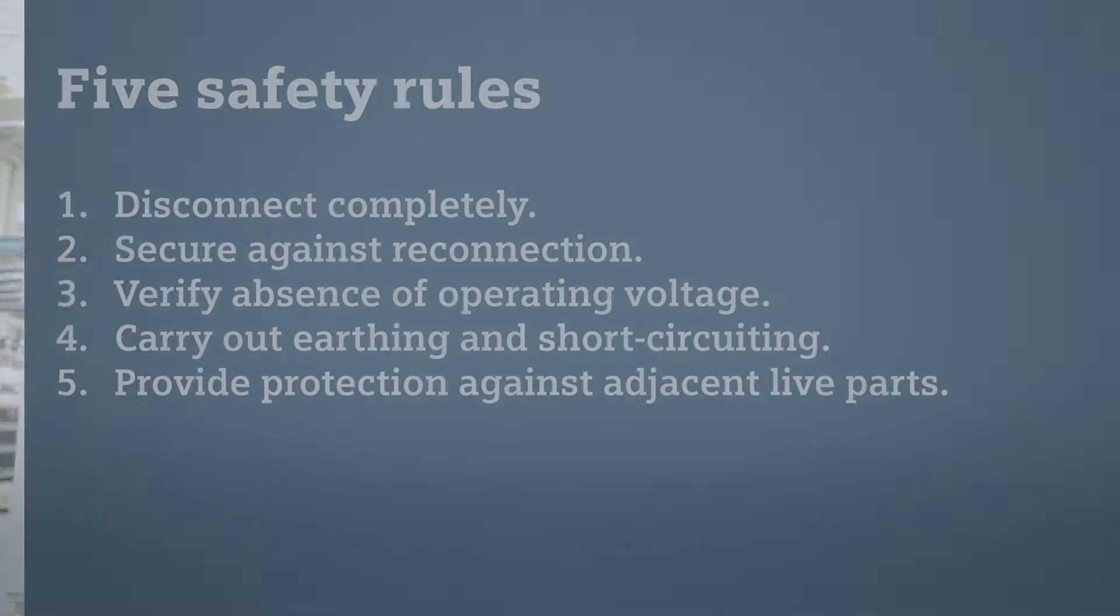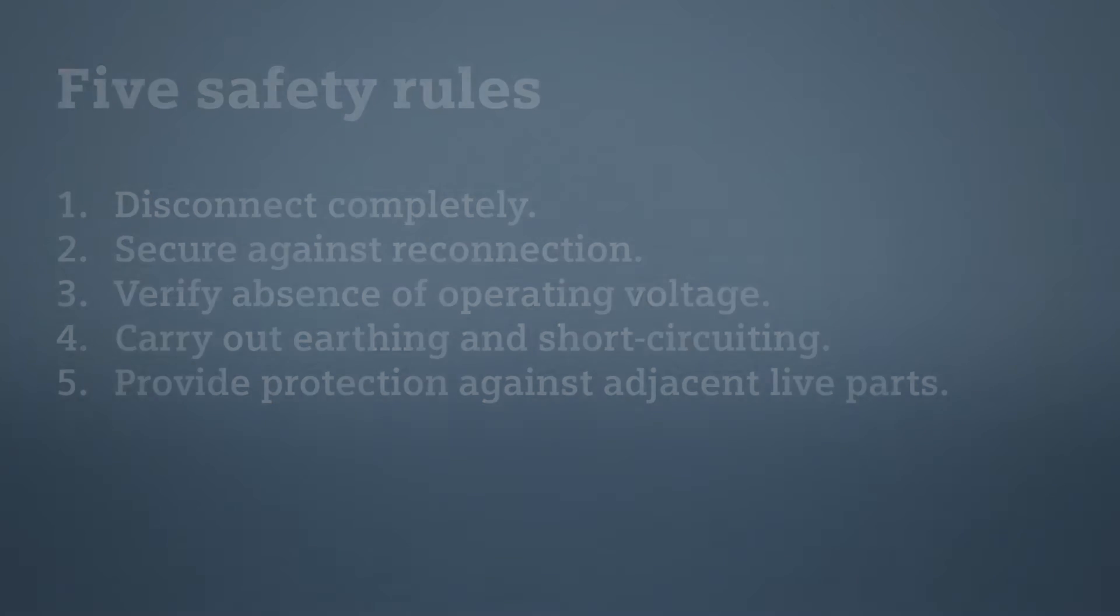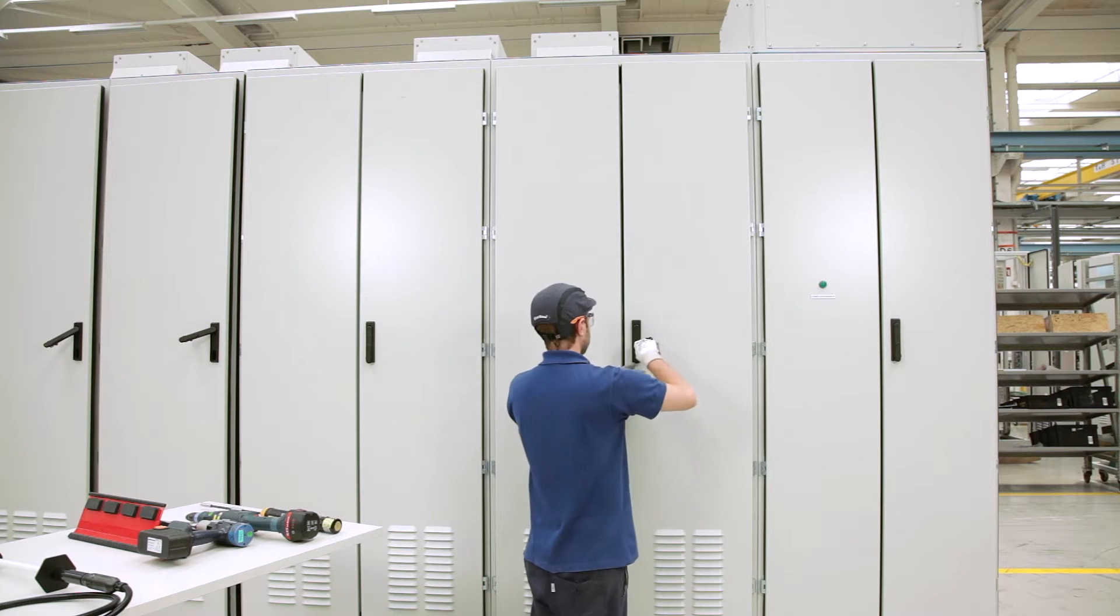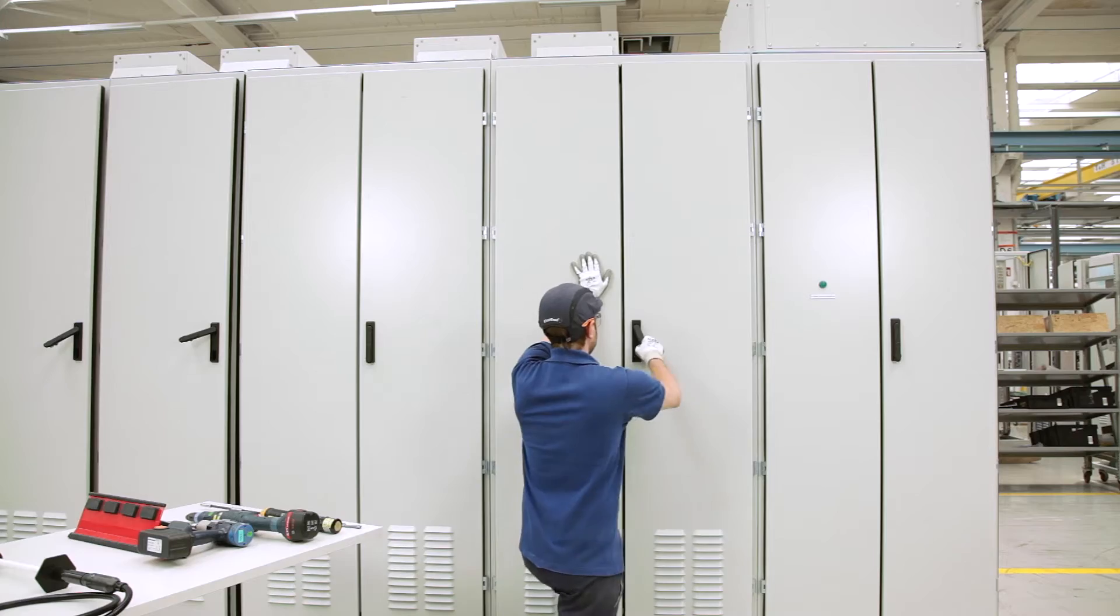In the following video, we will show you the simple steps to prepare the drive for exchanging the cell. After the main circuit breaker has been disconnected and secured against reconnection, open the doors of the power section first before disconnecting also the auxiliary voltage of the drive.